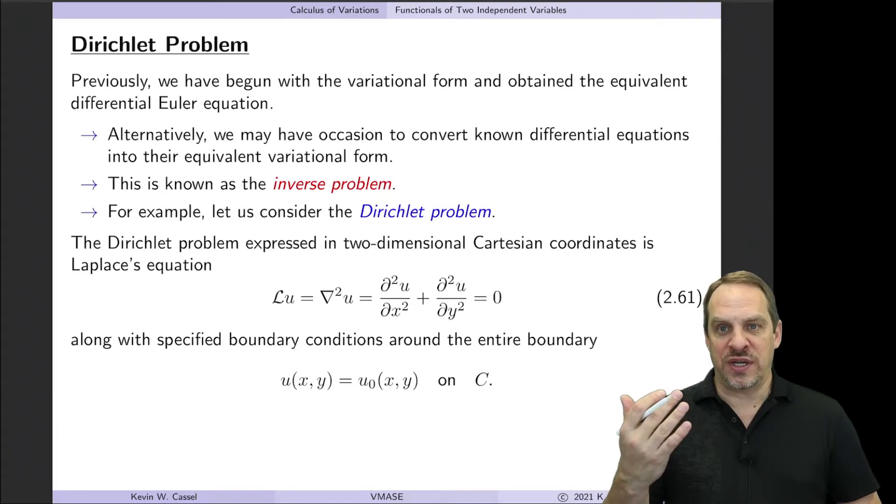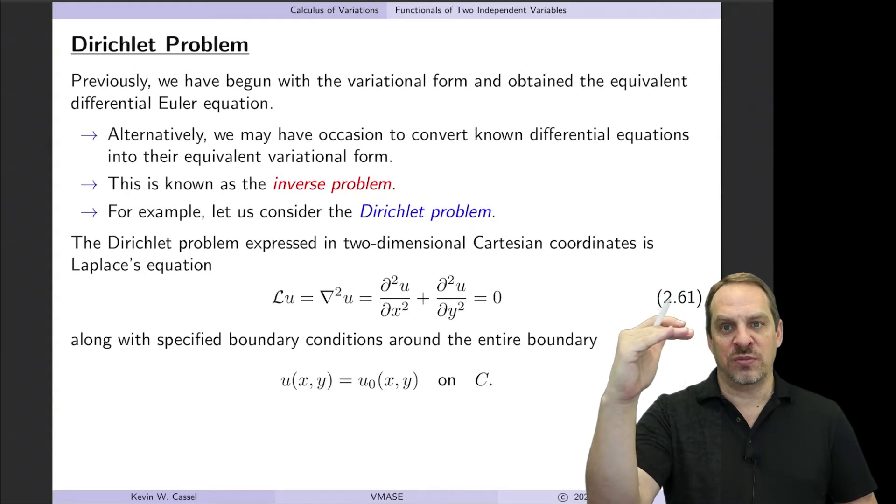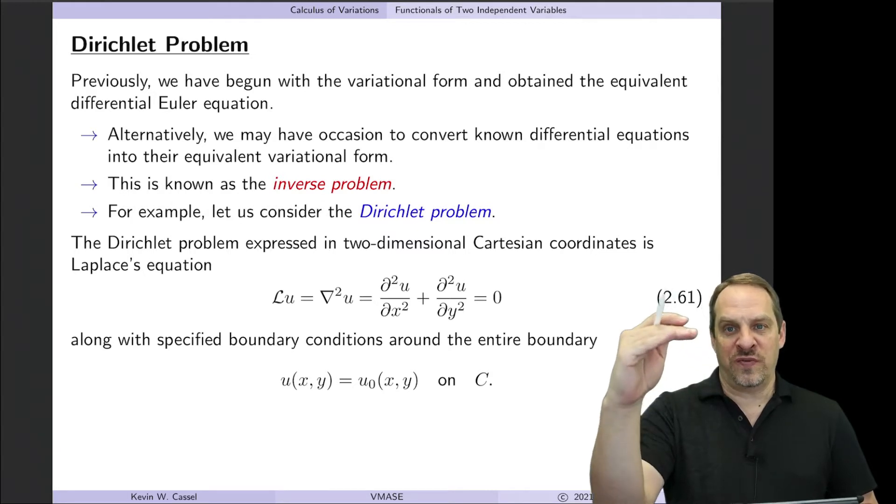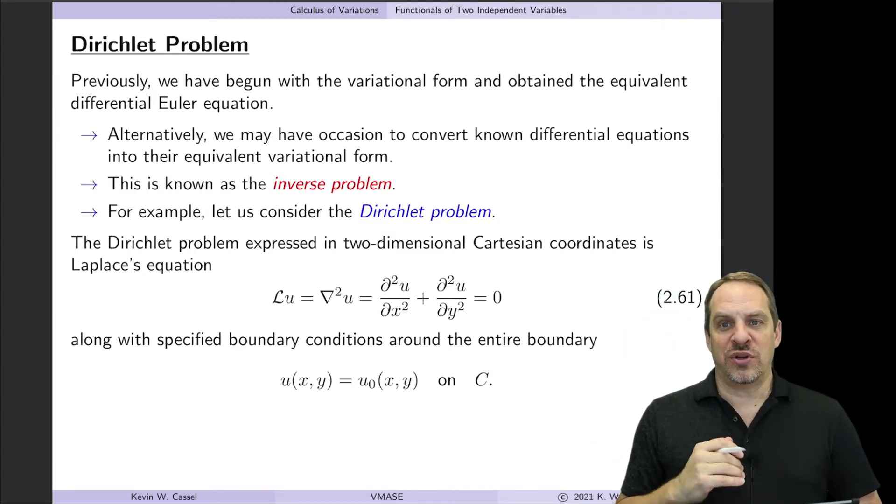But we're going to do it backwards, and the idea here is that, as we've been doing so far, we start with the variational form, that's step one, and then in step two we get the Euler equation, which you can think of as a differential form for that variational form. Now we're going to go backwards.